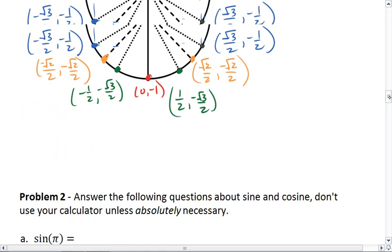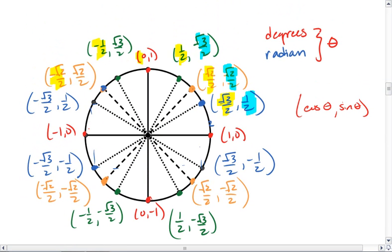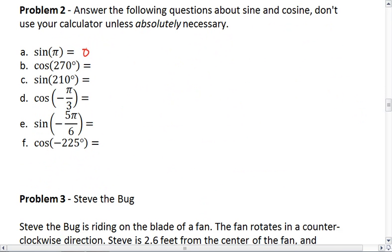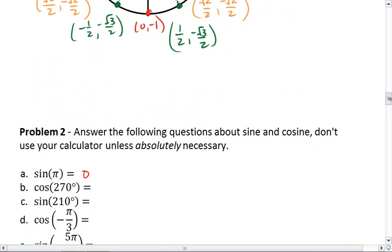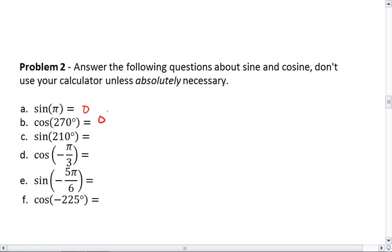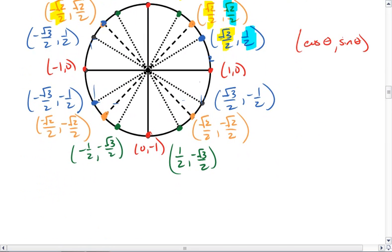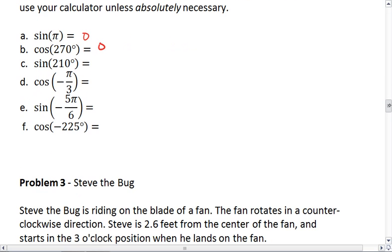Okay, sine of pi. Sine of pi is to the far left. It's our y coordinate, so sine of pi is 0. Cosine of 270 degrees should also be 0. Sine of 210. All right, here's 270. Here's 180. 210 is this blue dot. The sine value is the y value that's negative 1 half.